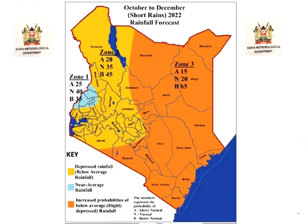The forecast for the period October to November stretching into December — referred to as the short rains — is so named because it takes a shorter time compared to the earlier rainfall season that takes place in March, April, and May. The short rains 2022 season constitutes an important rainfall season in Kenya, particularly in the central and southeastern regions of the country.